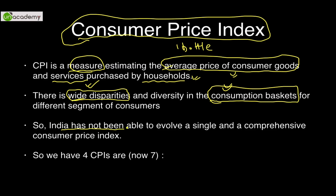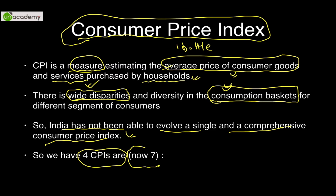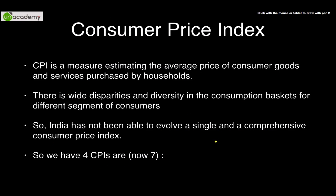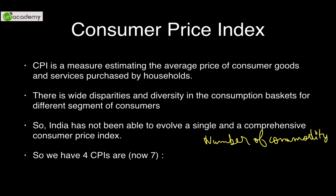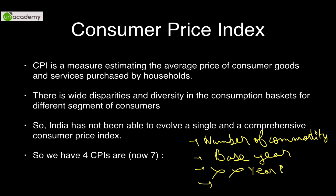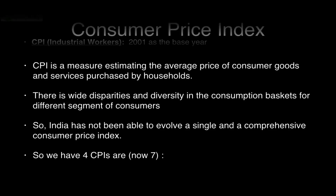Because of these disparities, India cannot have a single comprehensive CPI. We have four CPIs, and three more were added in 2011 — CPI Urban, CPI Rural, and CPI Rural+Urban — bringing the total to seven. For the original four CPIs, you need to remember four key points: the number of commodities, base year, year of introduction, and lag period — though these individual details are rarely asked in examinations.